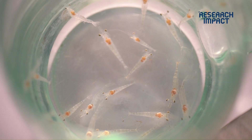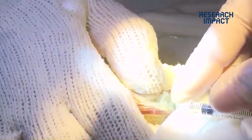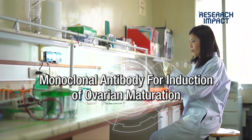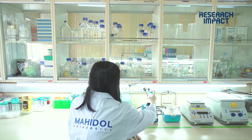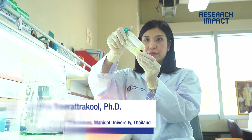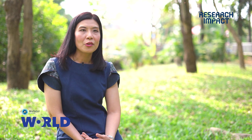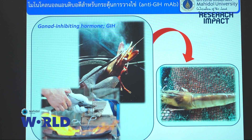In shrimp production, the eyestalk ablation technique is generally used in shrimp hatchery to induce ovarian maturation. We developed a new strategy that can induce ovarian maturation in shrimp without eyestalk ablation. The research is a monoclonal antibody for induction of ovarian maturation, which is able to induce ovarian maturation and spawning that gives comparable levels of shrimp production to eyestalk ablation.